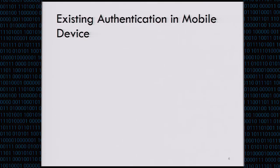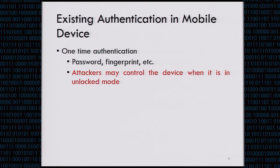So people used to rely on authentication to alleviate this situation. There are mainly two kinds of existing authentication methodologies for mobile devices. The first one is one-time authentication, which is used when users try to unlock the device based on password or fingerprint. But sometimes when we leave the device, we might forget to lock it, so attackers may grab the time window to control the device.